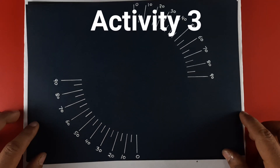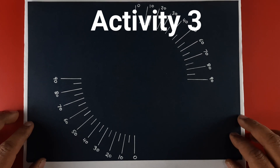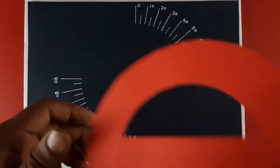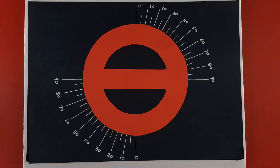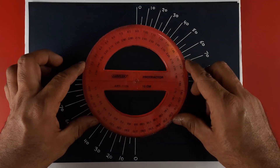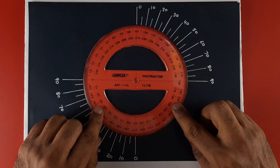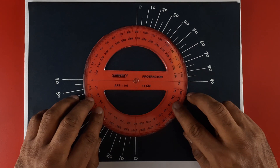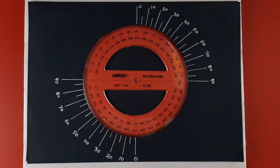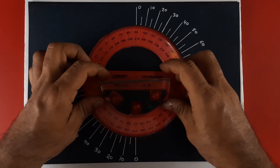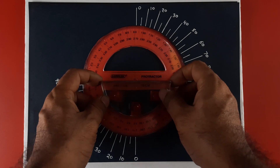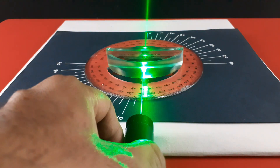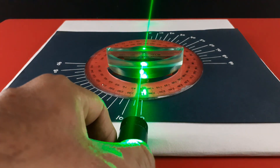In activity three, we will find the conditions under which total internal reflection of light takes place. We place a circular protractor on a black sheet on which angles are marked for easy reference. Then we place a semicircular glass slab on the protractor and pass the laser beam from the curved surface of the glass slab.